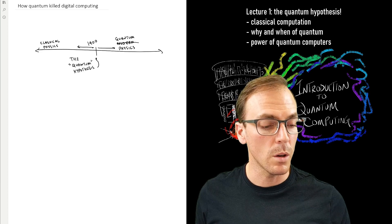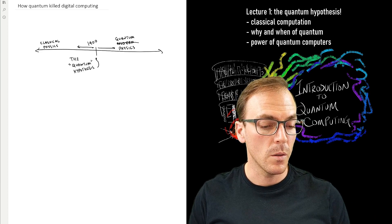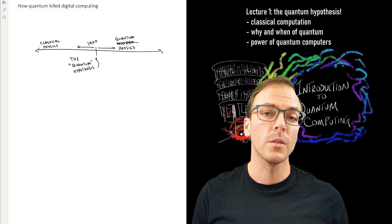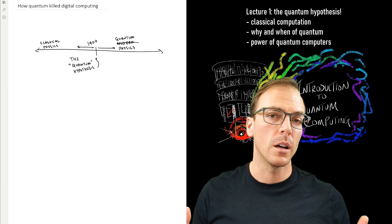So we will talk about quantum physics versus classical physics. Now, in a sense, quantum physics is more general than classical physics, so you can derive classical physics from quantum mechanics.